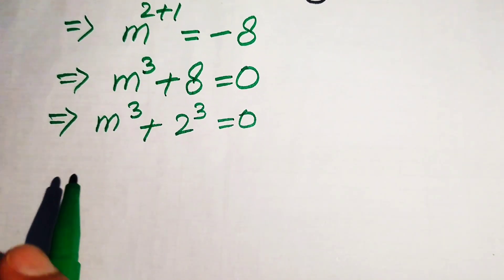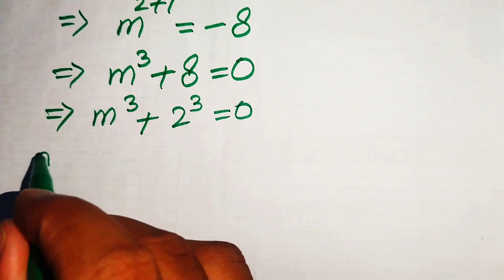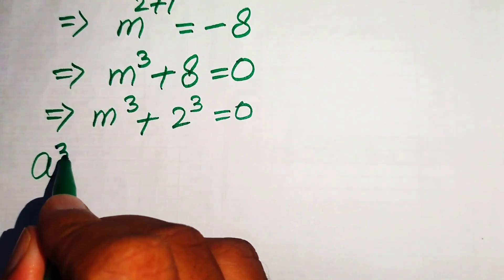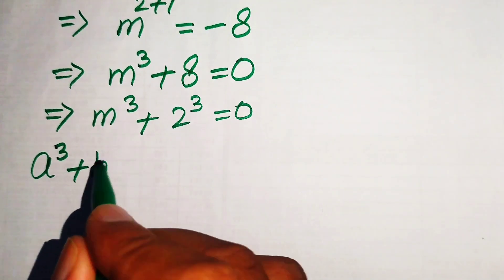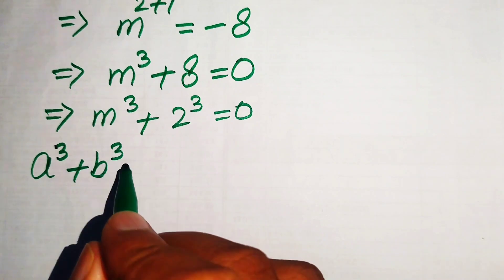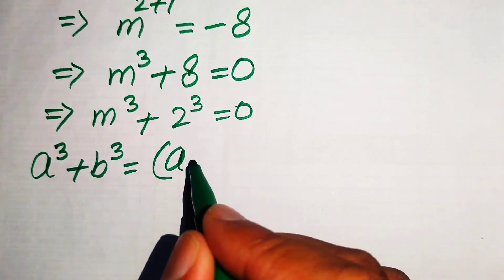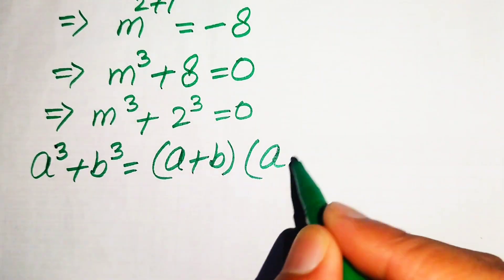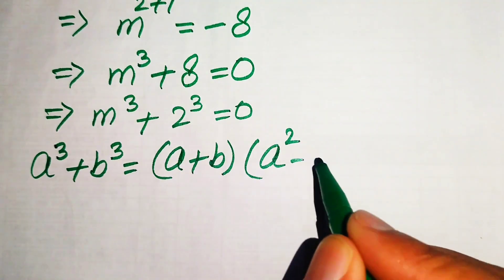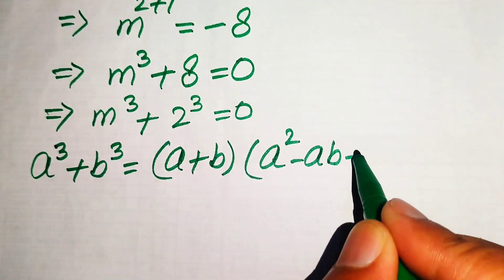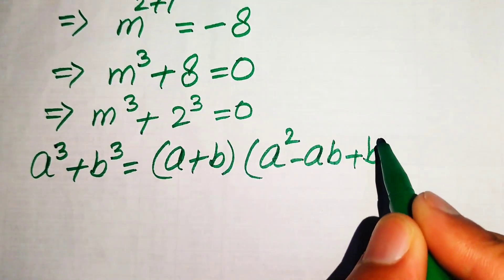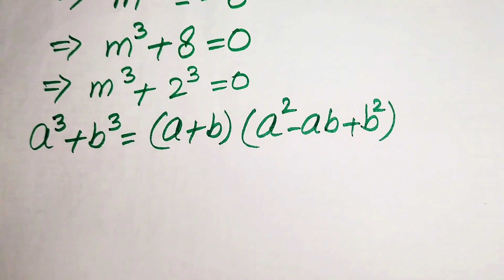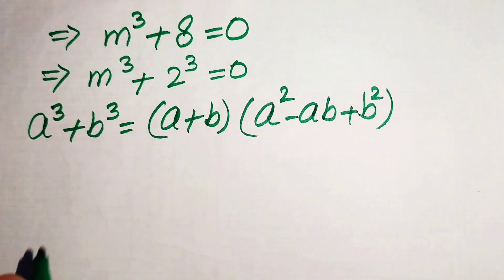Now we apply the cubic identity. The formula is: a cubed plus b cubed equals (a plus b) times (a squared minus ab plus b squared). We use this formula on the above equation.